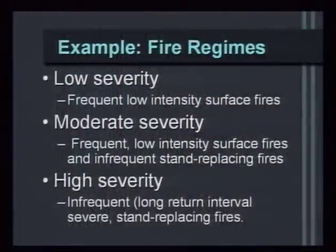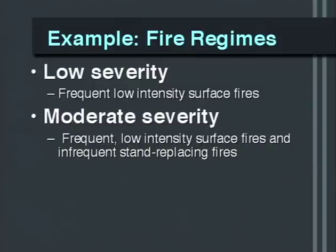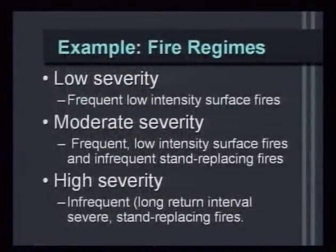Using fire regimes as examples, we can break down how fires occur into three general regimes. Low severity regimes are frequent, low-intensity surface fires — occurring in a ponderosa pine site perhaps every 8 to 10 years. Moderate severity regimes involve frequent low-intensity surface fires but with occasional large infrequent stand-replacing fires, as we might see in the western Cascade Range Douglas-fir forest. Finally, high severity regimes are infrequent, with long return intervals of 100 to 350 years, producing severe stand-replacing, very large fires — seen in wetter forests and some boreal regions.